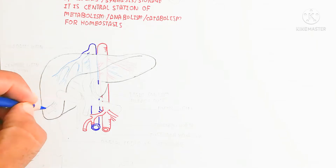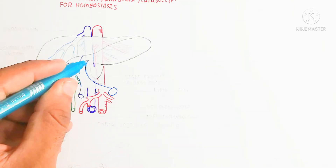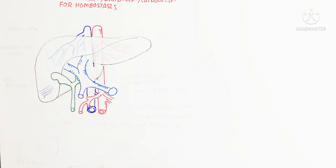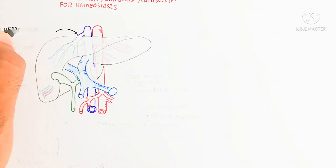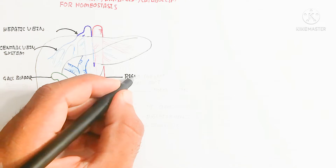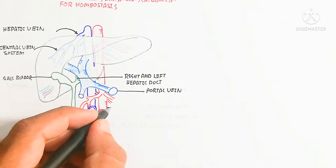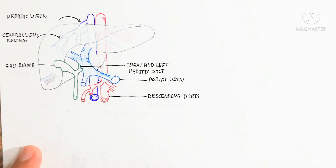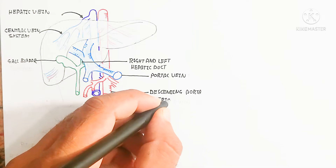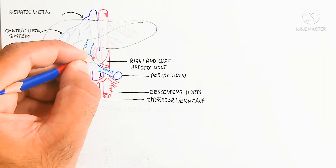Here we can see the hepatic vein and hepatic artery, the descending aorta, and the inferior vena cava. The hepatic artery supplies blood to the liver, and the hepatic vein collects blood and moves it toward the heart. The liver contains two lobes — a smaller lobe and a larger lobe. The gallbladder is present here, along with the central vein system. The right and left hepatic ducts collect bile, and the portal vein collects nutrients from the gastrointestinal tract toward the liver.